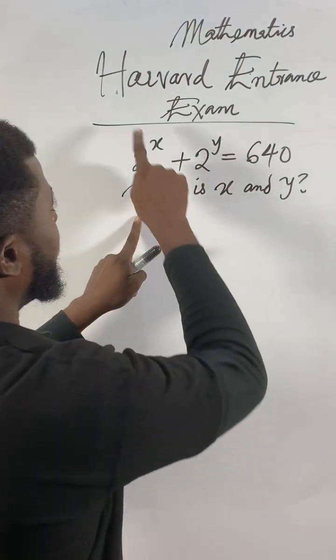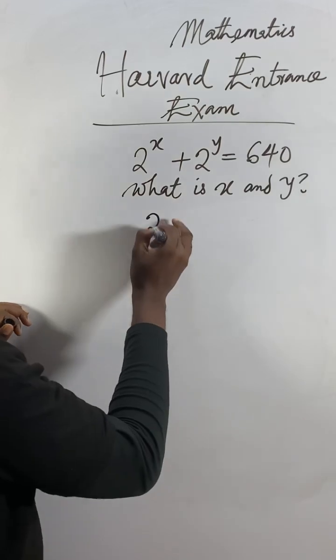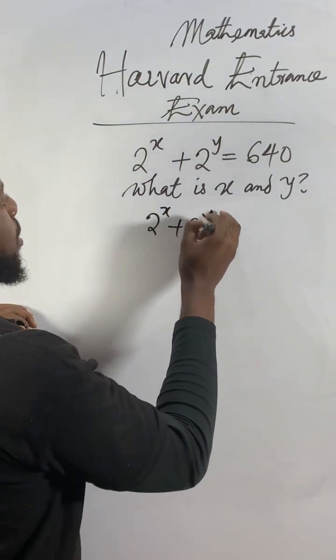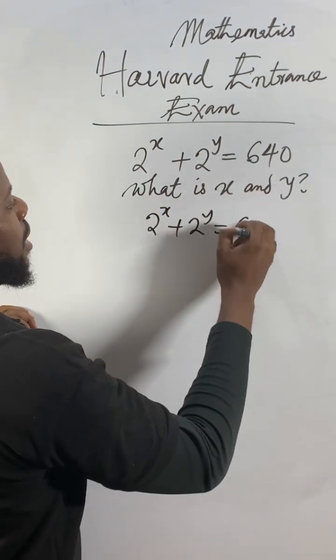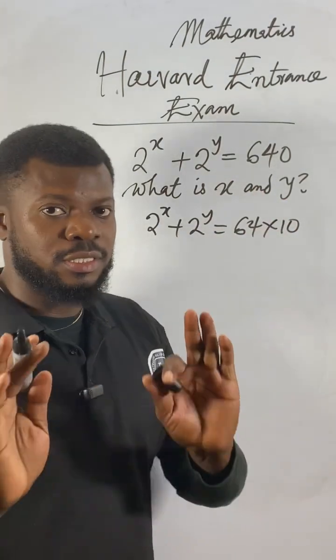Okay, come here, I'll show you how to solve this Harvard entrance exam problem. So we get 2 to the power of x plus 2 to the power of y equals 640. I feel like 64 times 10. 64 times 10 will give me 640. As simple as that.